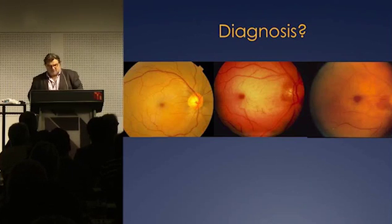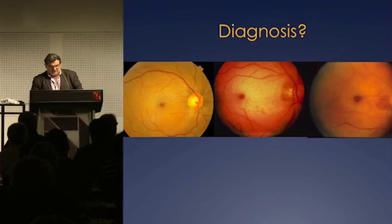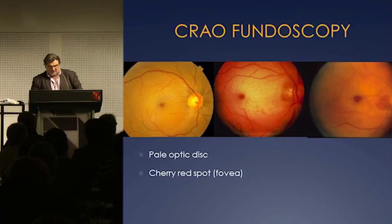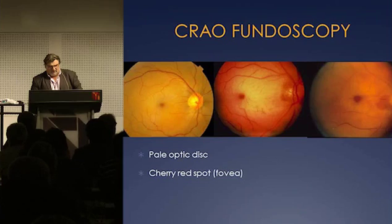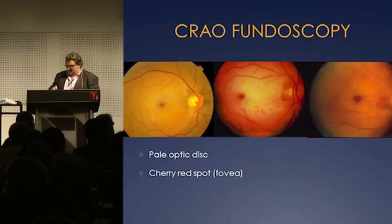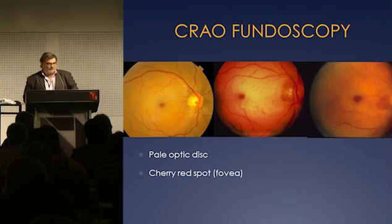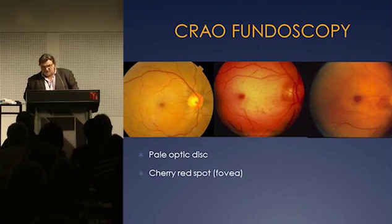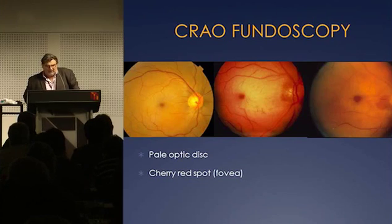What we see in this particular picture is this red spot here, which is actually the fovea. You'd call it cherry red — it's so nice and bright. A fairly classic cherry red spot with a pale optic disc, which is central retinal artery occlusion on fundoscopy.